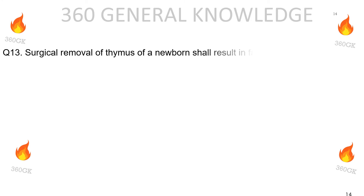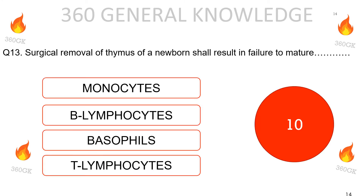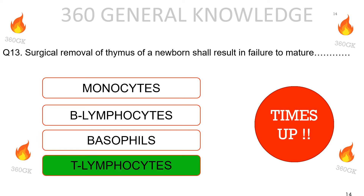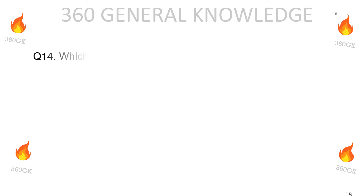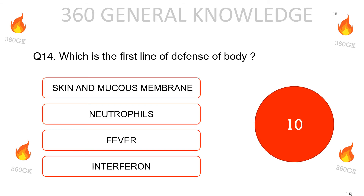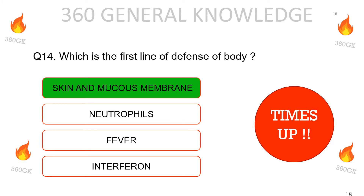Surgical removal of the thymus in a newborn results in failure to mature: monocytes, B-lymphocytes, basophils, or T-lymphocytes? The correct answer is T-lymphocytes. Which is the first line of defense of the body: skin and mucous membranes, neutrophils, fever, or interferon? The correct answer is skin and mucous membranes.